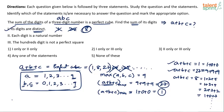Now, since Statement 1 alone is sufficient, you can cancel out Option 3 — because Option 3 says only Statements 2 and 3 are sufficient. Options 1 and 2 both include Statement 1 being sufficient. It is also available in Option 4. Statement 1 is sufficient.